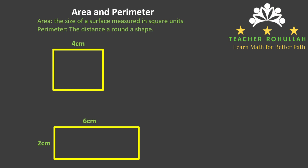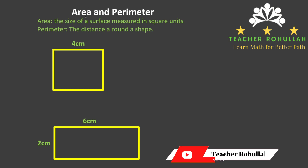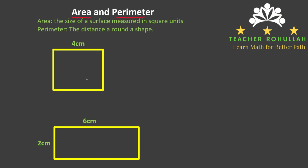Hello and welcome to Teacher Roholo's channel. In this video we are going to work on area and perimeter of a square and a rectangle. Area is considered as the size of a surface, which is measured in square units such as centimeter squared, meter squared, millimeter squared, and so on.